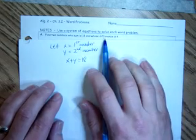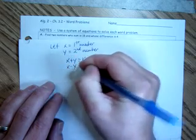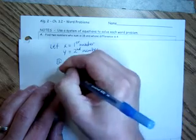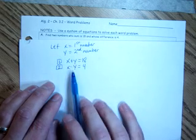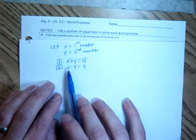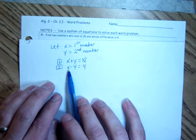Now that we've defined these two numbers as x and y, I can show a sum of x and y equal to 18. I can also show a difference between x and y is equal to 4.